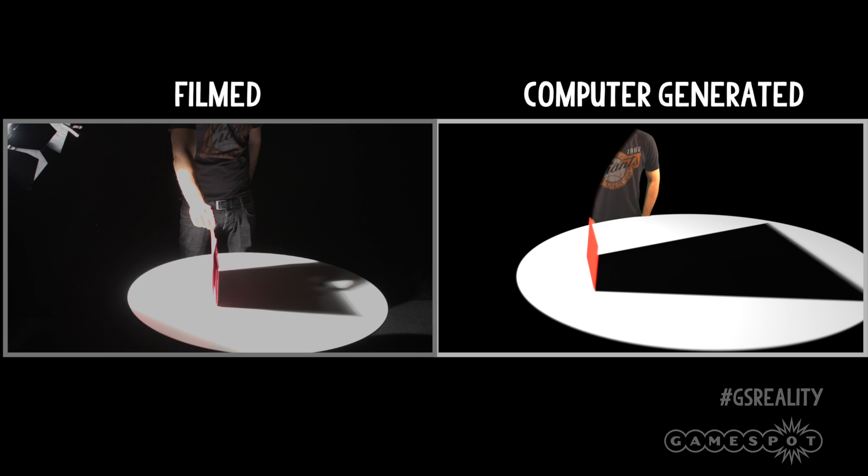Now what happens when we move something in front of the light source, say a red rectangle? Well, as we see in both cases, the rectangle casts a shadow. But what's the difference? Well, in the computer generated scene, when the light is blocked or occluded, the resulting shadow is black. Not grey, or very very dark grey. But black — a complete absence of light.